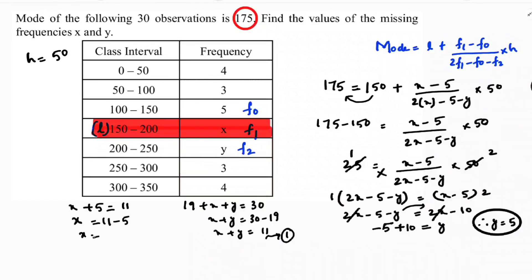The value of x is 6 and y is 5. So one more time, I'll tell you how to select the modal class. See, modal class for a normal problem, we'll select by seeing the highest frequency, but for missing frequency problem, see the answer, the mode answer, in which class it lies.